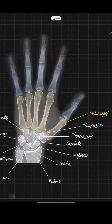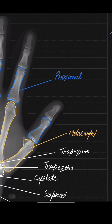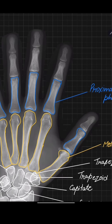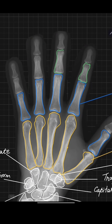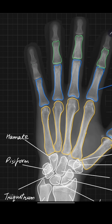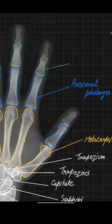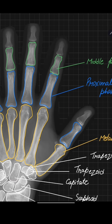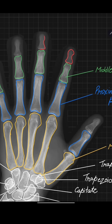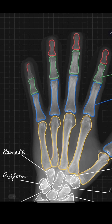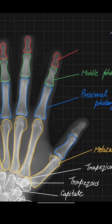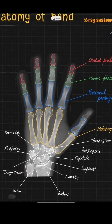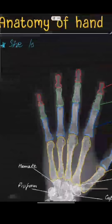Now you can see the phalanges. It is very important to note that we have three phalanges — proximal, middle, and distal — for our four fingers. But the thumb is the only one which has only two phalanges: the proximal and distal. The middle phalanges of the four fingers are very important to make the grip. The distal phalanges are very little and are far from the carpal bone, which is why we call them distal phalanges.